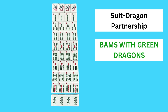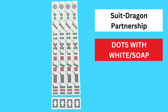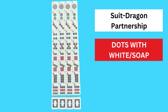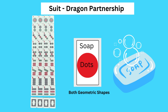Finally, we move on to the last of the partnerships, and that is the Dots and the Soap. These suit tiles do not have a predominant color. To help you remember this partnership, you could look at both the dot symbol on the suit tile and the dragon tile as being geometrically shaped. Or you could remember the term 'soapy bubbles' — the dots look like bubbles and the dragon looks like a small soap.